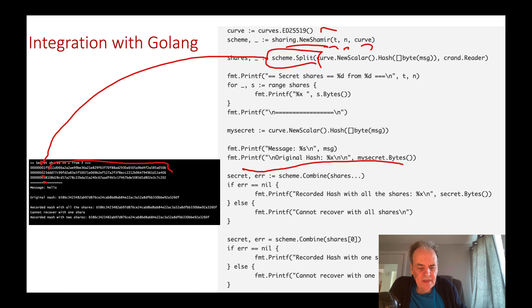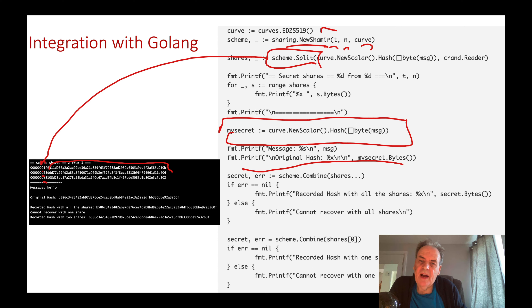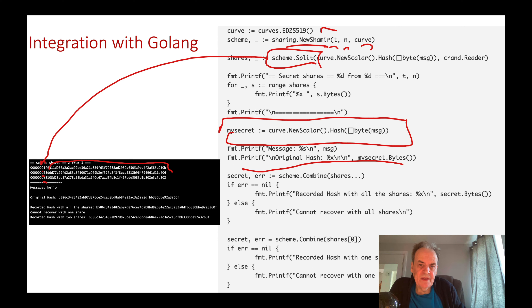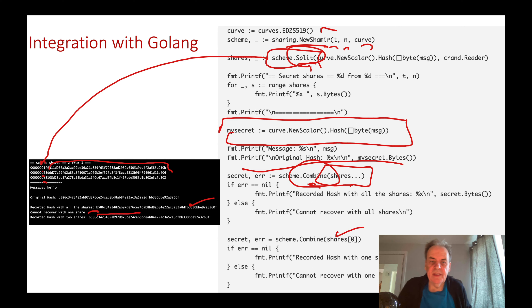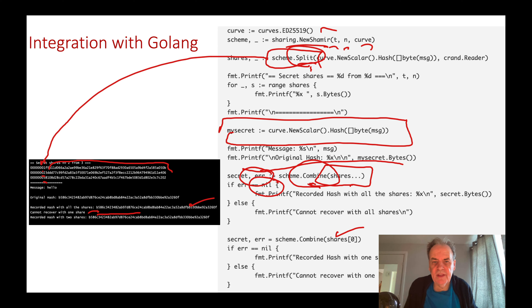We create our secret and hash it into a scalar value — the scalar multiplier on the curve. We then split the shares and combine them. In the first case, taking all shares together, we should be able to rebuild the secret. But when we try to rebuild from just one share, we cannot. In Golang, an error value is returned; if it is not nil, the combination was not successful.